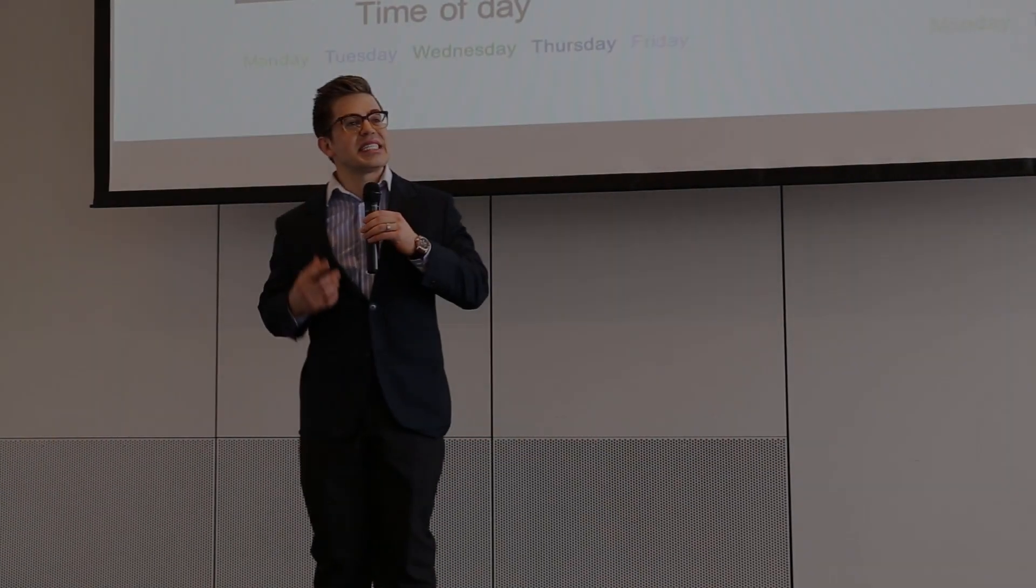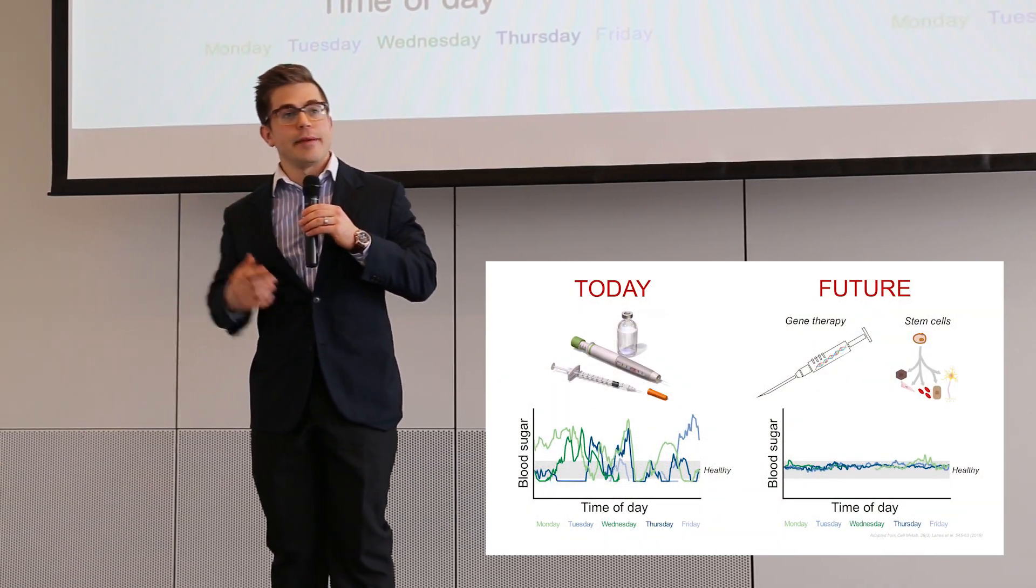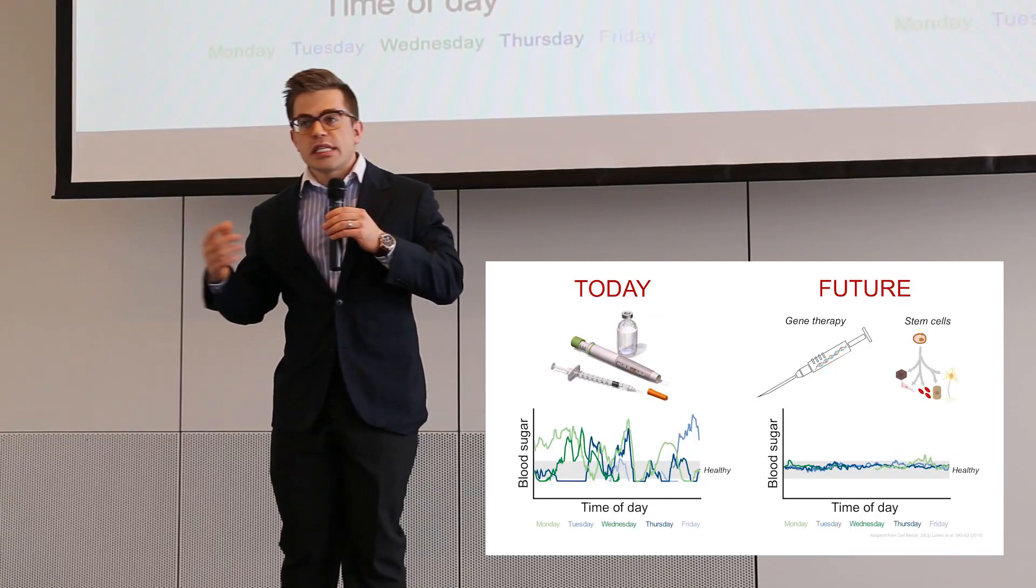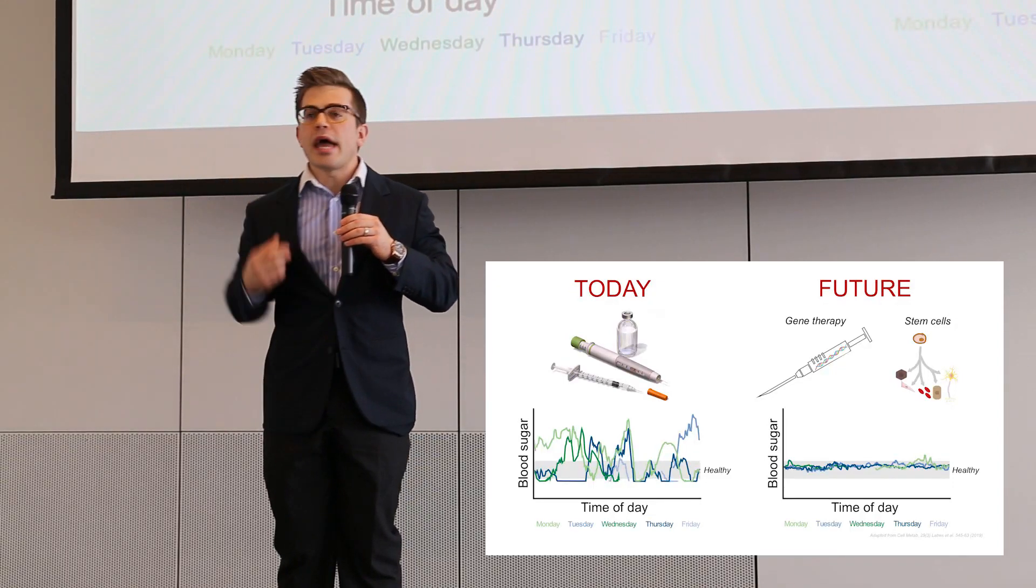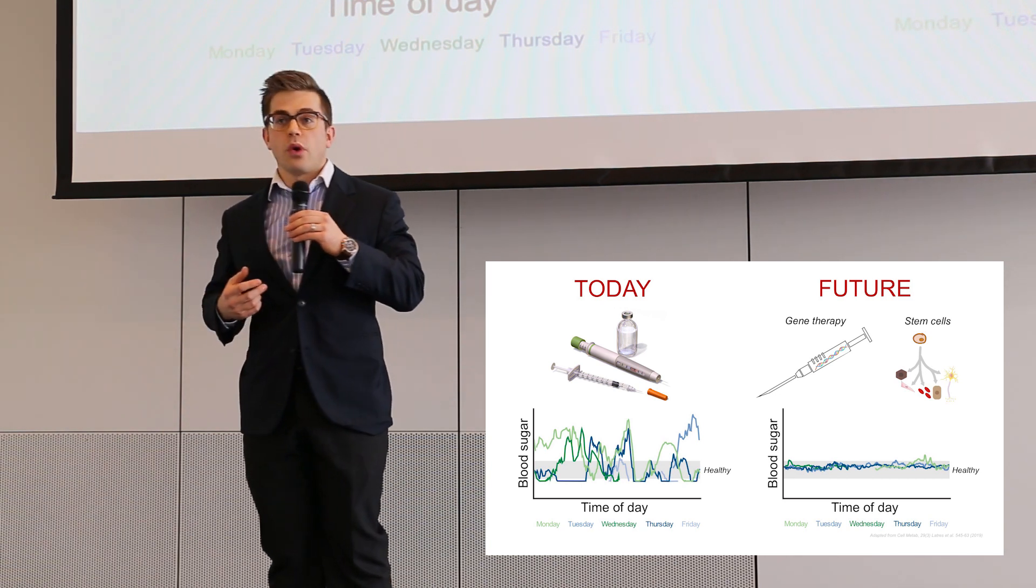What accounts for 1 in 6 deaths and 1 in 4 healthcare dollars? The answer is diabetes. Diabetes is the disease of high blood sugar and occurs when beta cells in the pancreas fail to produce enough of the hormone insulin.